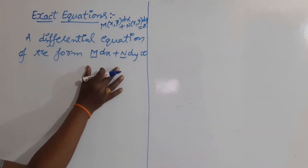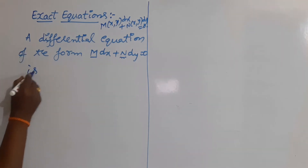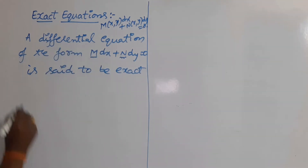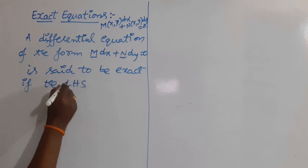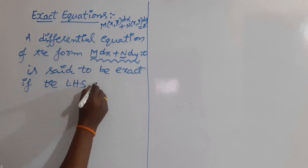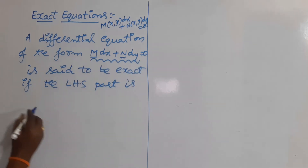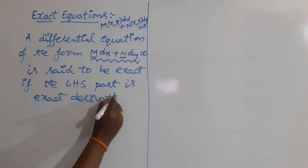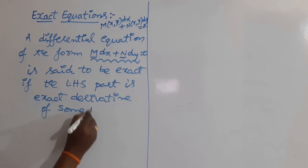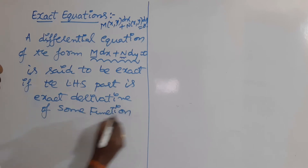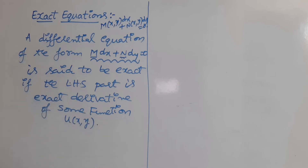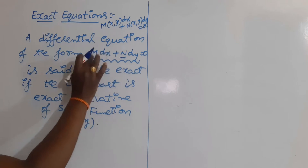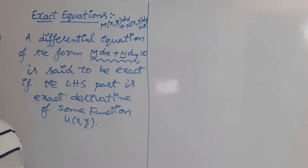This is the standard form of a first order and first degree differential equation. It is said to be exact if the left-hand side part — M dx plus N dy — is an exact derivative of some function u(x, y). It means that if you take the derivative of u(x, y) and get M dx plus N dy, then M dx plus N dy = 0 is called exact.